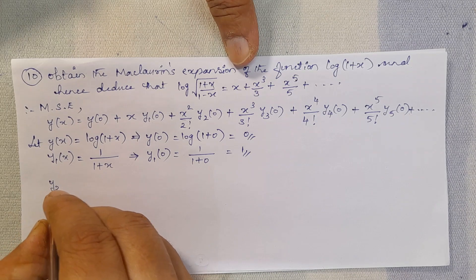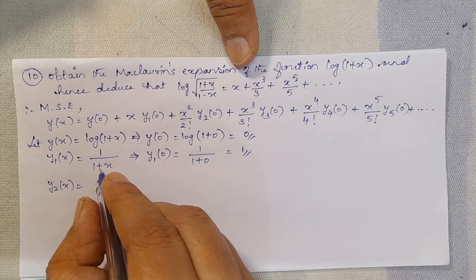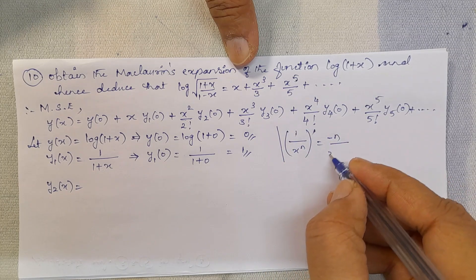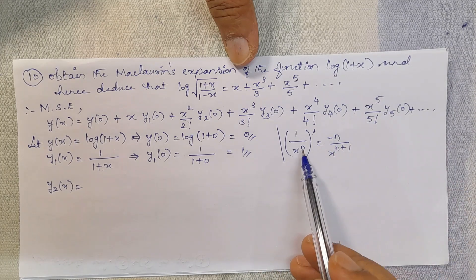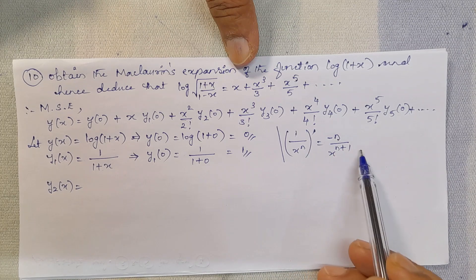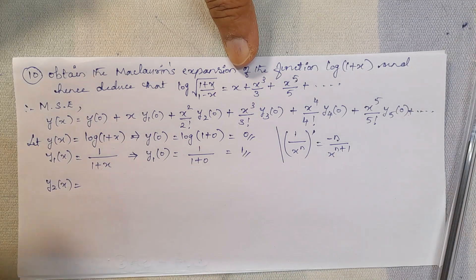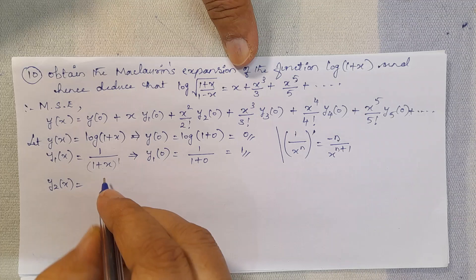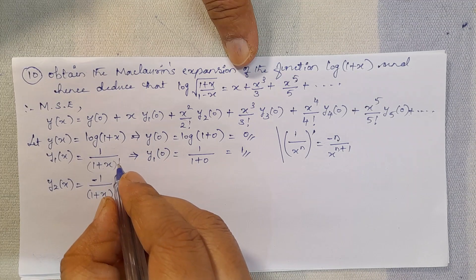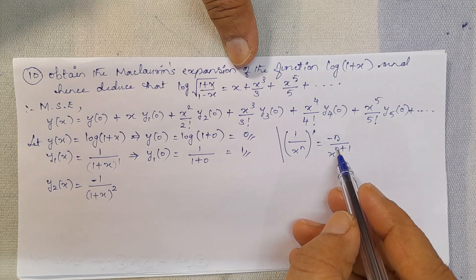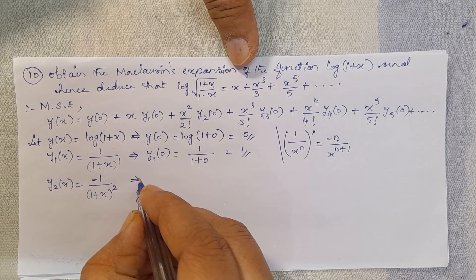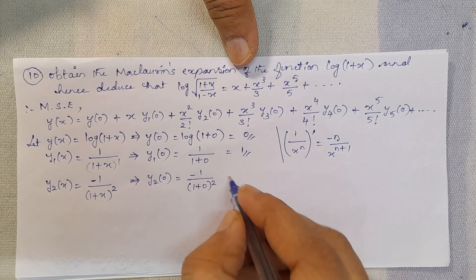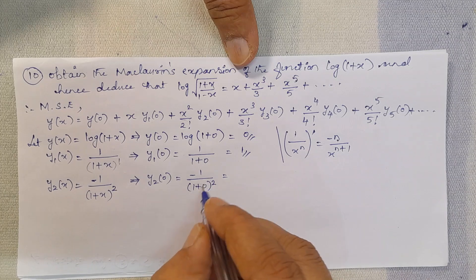Next, find y2(0). y2(x) is the differentiation of y1(x) = 1/(1 + x). Using the formula: differentiation of 1/xⁿ = -n/x^(n+1), with n = 1, we get y2(x) = -1/(1 + x)². So y2(0) = -1/(1 + 0)² = -1/1 = -1.